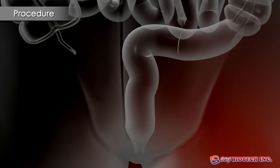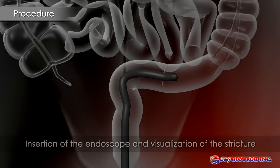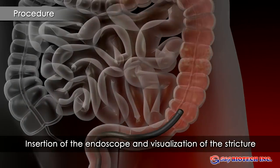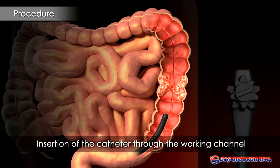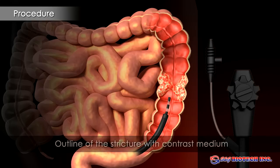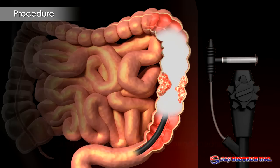The procedure may be performed under endoscopic or fluoroscopic control. This presentation illustrates endoscopic stent placement. A catheter is placed at the lower end of the stricture and a contrast medium injected to identify the position and length of the stricture.